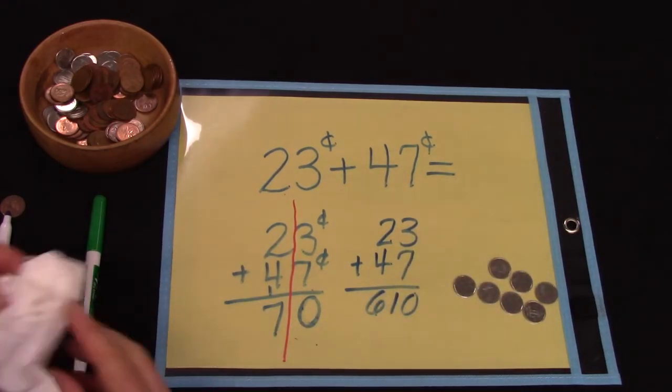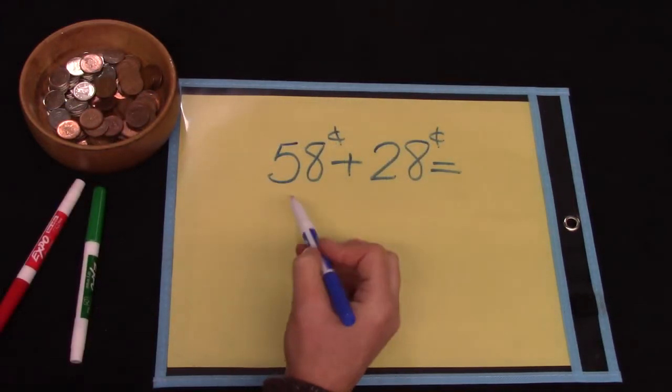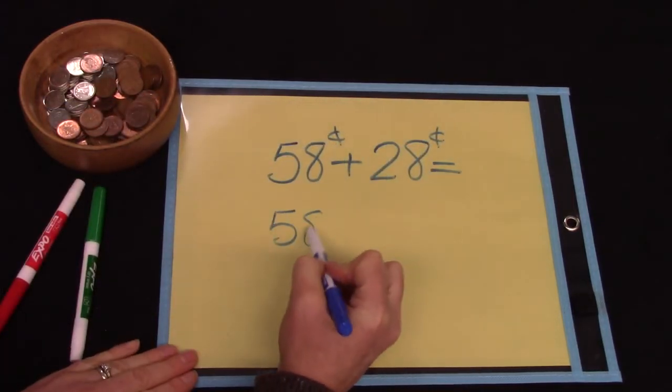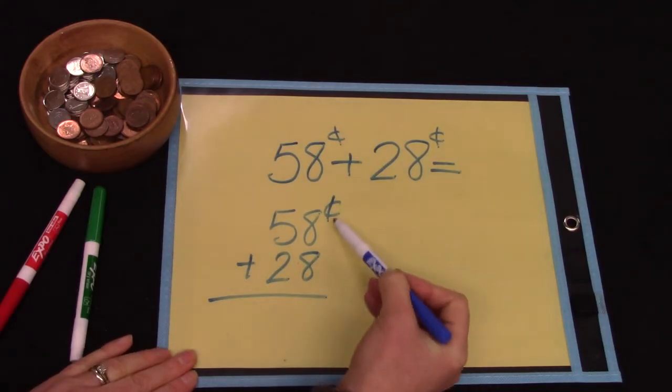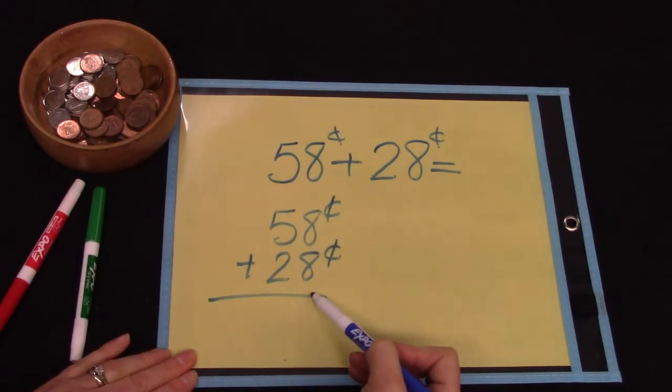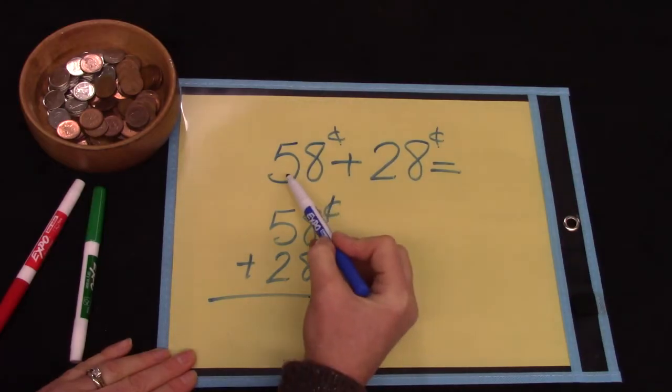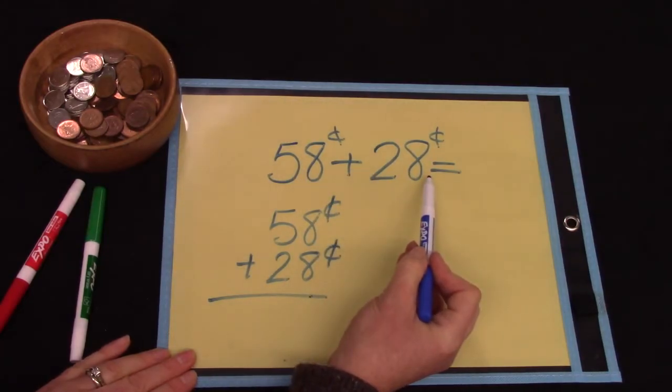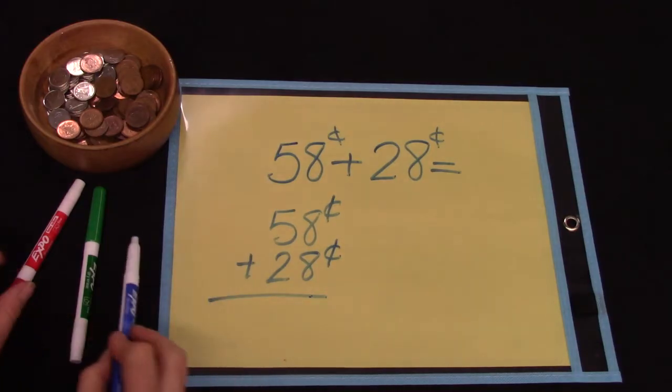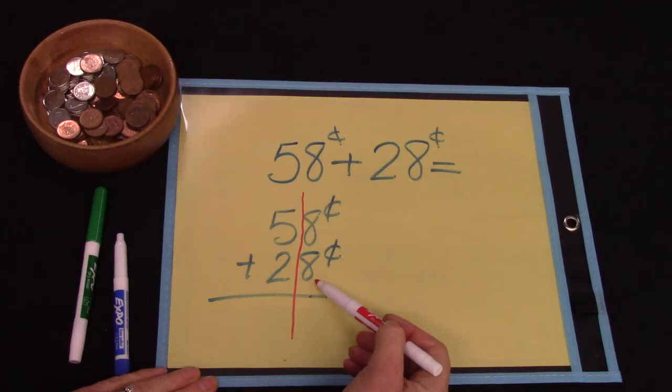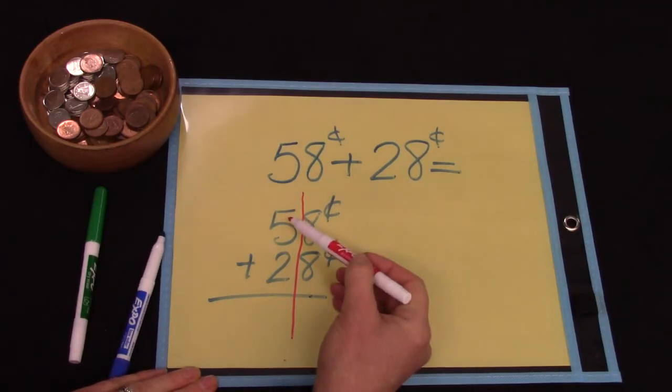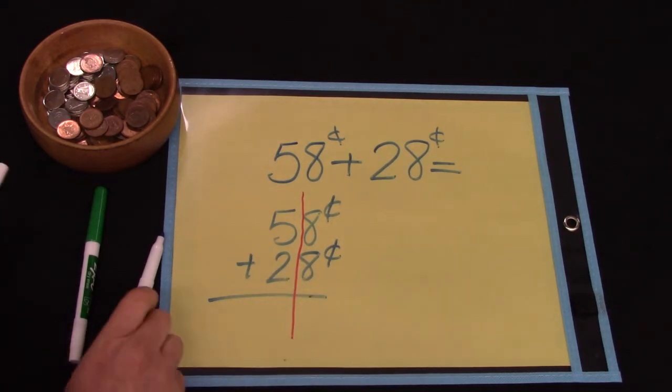Let's try this again. Here in this question we have 58 cents plus 28 cents. It is much easier to write this vertically or on top of each other than it is horizontally or beside. When we're doing this we need to make sure that the numbers in the ones place or the pennies are above each other and the dimes or the tens place are right above each other.